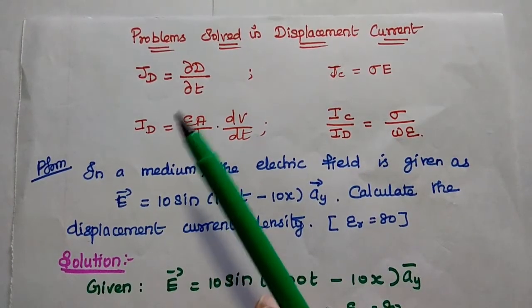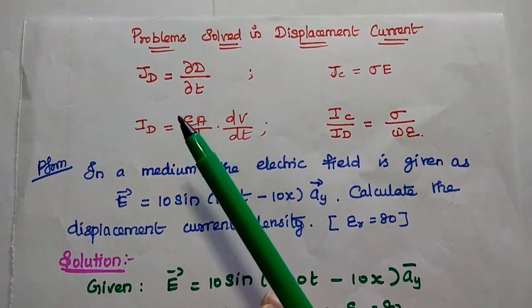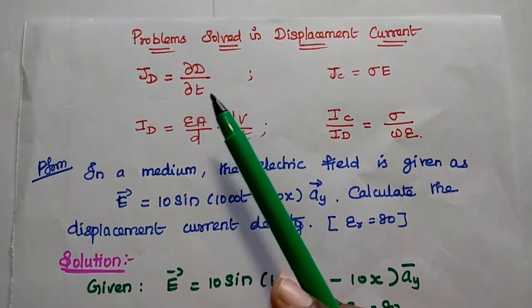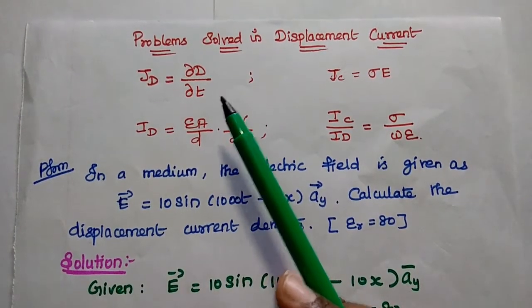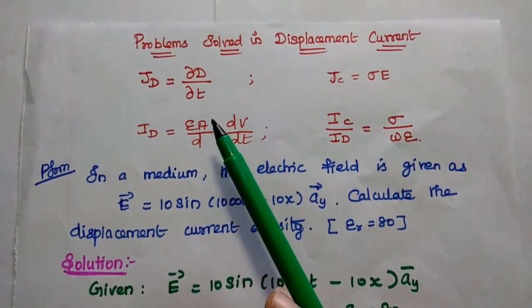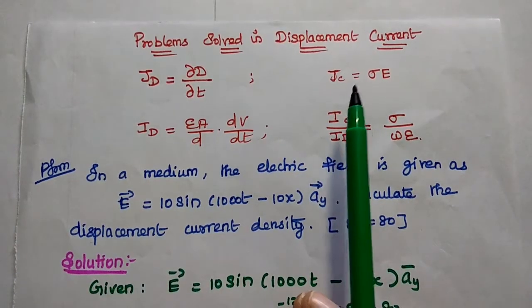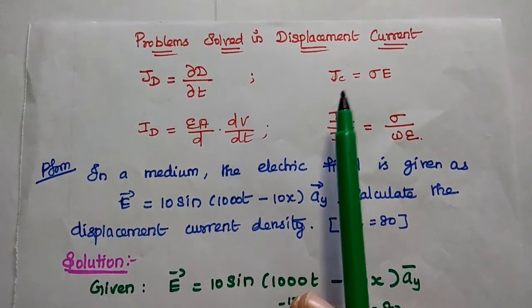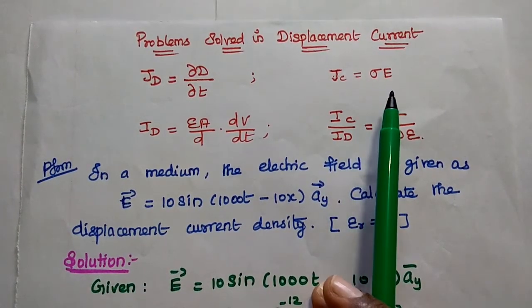The displacement current density is denoted as JD, that is equal to ∂D/∂T. Conduction current density is denoted as JC, that is equal to sigma times E.